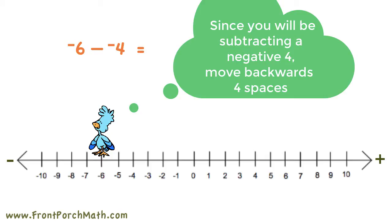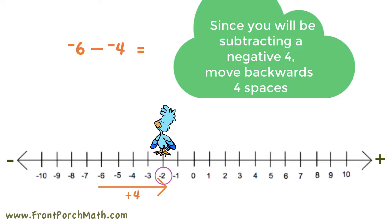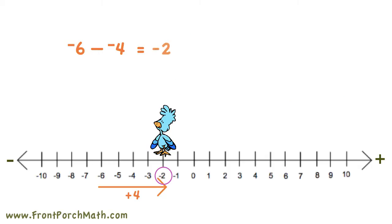Now we'll be subtracting negative 4, and since it is negative, we'll be moving backwards four spaces, landing us on negative 2. So, negative 6 minus negative 4 is negative 2.